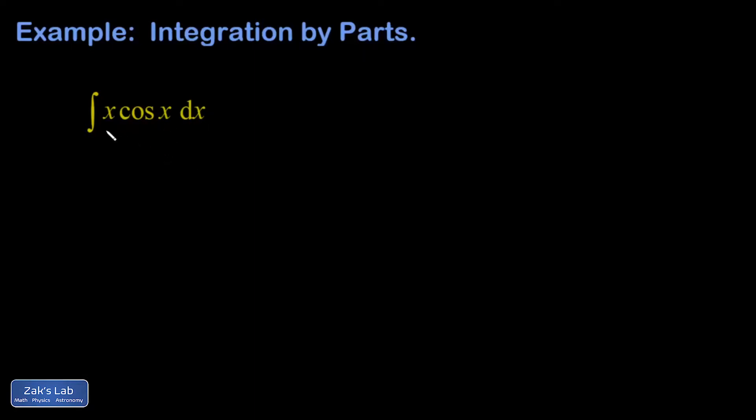So what we're going to do on this one is identify x as u, because when I differentiate it, it becomes simpler. So if x is u, then my du is just dx.